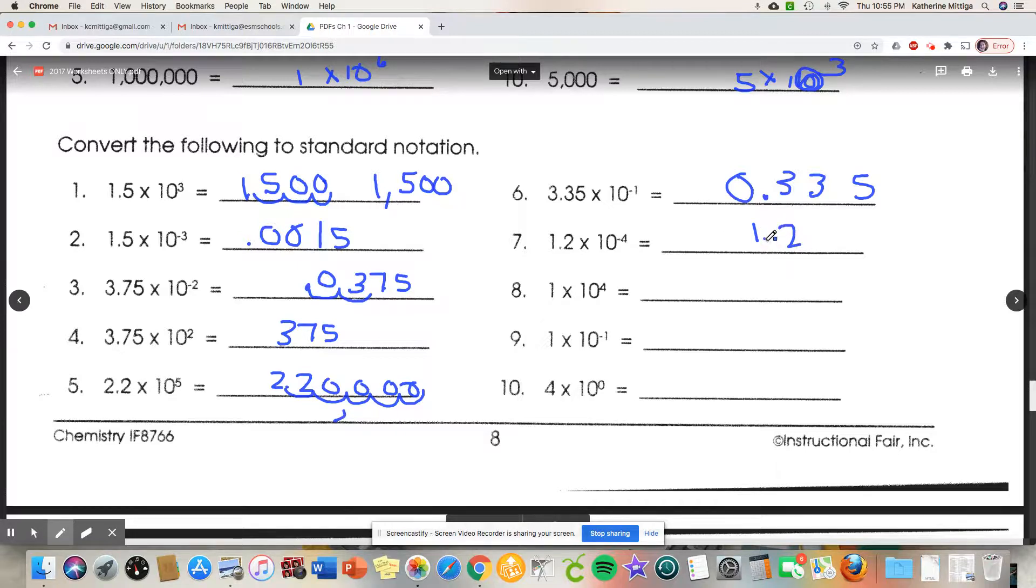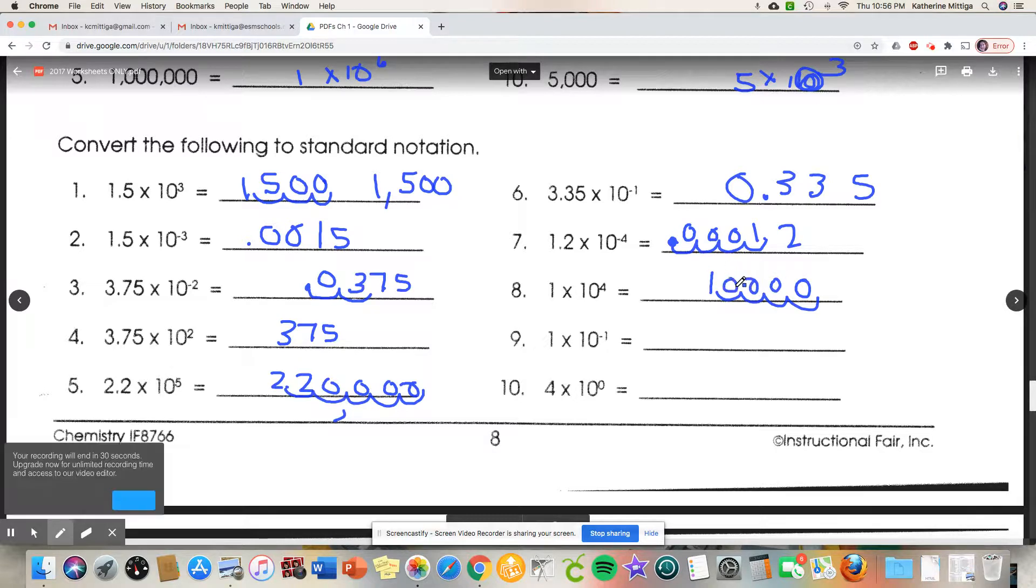1.2 times 10 to the minus 4 is going to be one, two, three, four. Throw that decimal place in there. So if it's hard to read, this is 0.00012. 10 to the fourth. Let's see, so that's one. No decimal place, but it'd be here: one, two, three, four. So that is ten thousand. Do you need a comma here? I don't know. I guess you can space it out. Move this way one, so 0.1. And 10 to the zero, that means move your decimal place zero spots, or you just know this is equal to one, so we're just left with four.